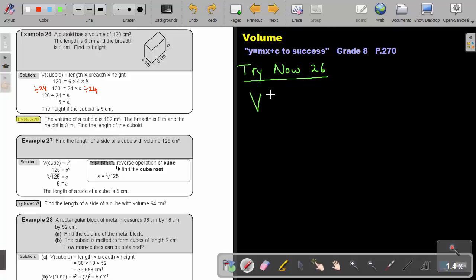The volume of a cuboid. Remember what's the volume? It's length times breadth times height. Now just substitute. The volume is 162, the breadth is 6 and the height is 3.